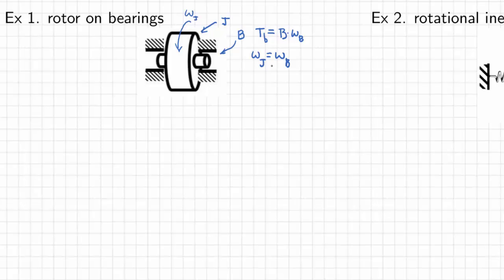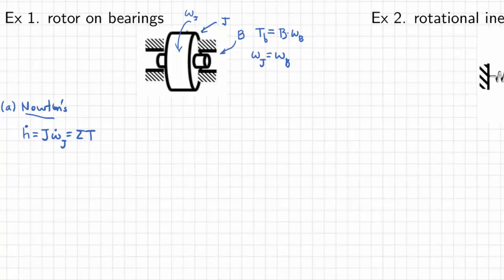Let's look at a couple of different ways of working this problem. The first is a straight Newton's law approach — if this is all you need to understand this little problem, this is the quickest way. You'd say the rate of change of angular momentum H-dot equals J times omega-dot-J, which is the sum of the torques. If the system is spinning initially at omega sub J, and we ignore windage, the only torque is due to the damper, so the equation is just omega-dot-J equals minus T sub B.